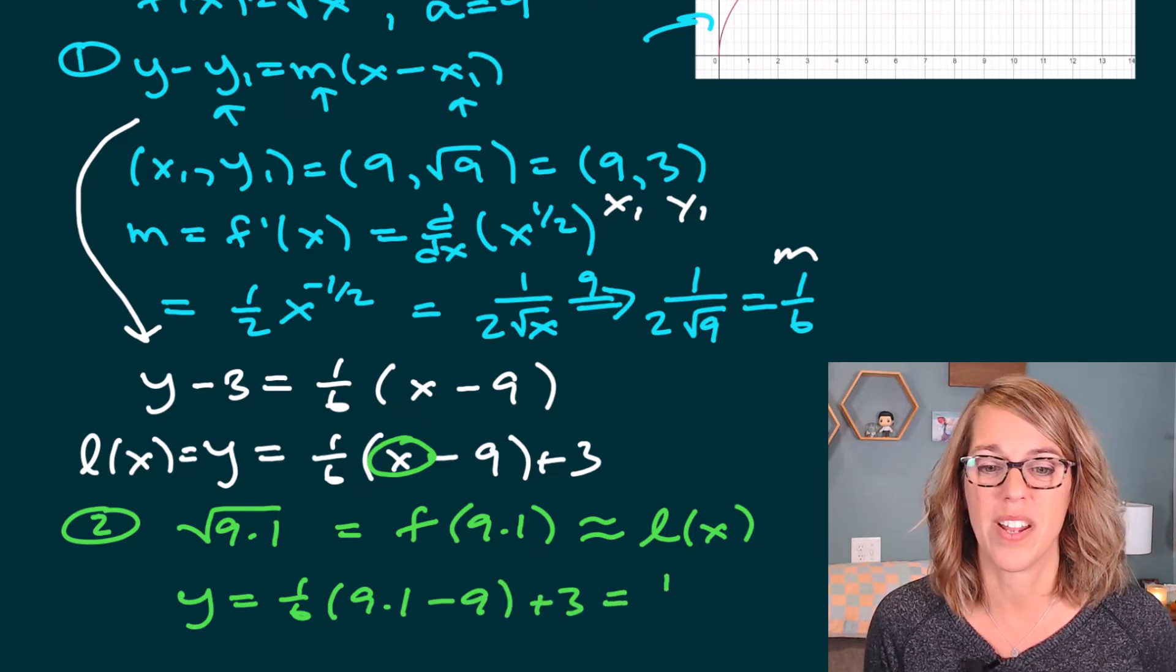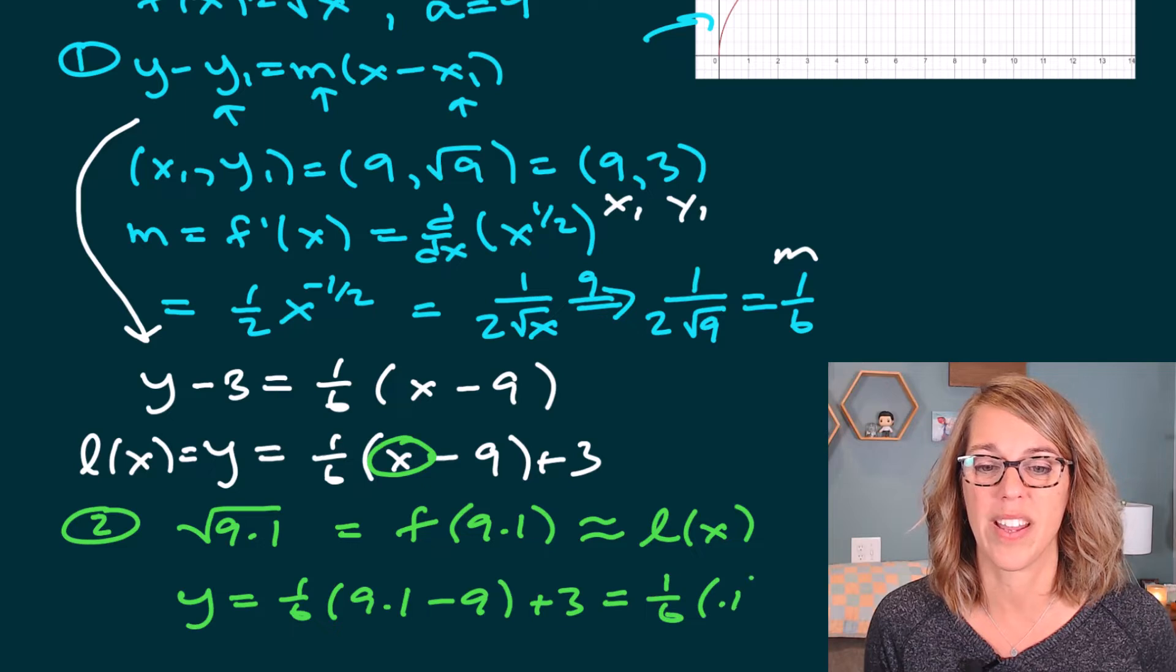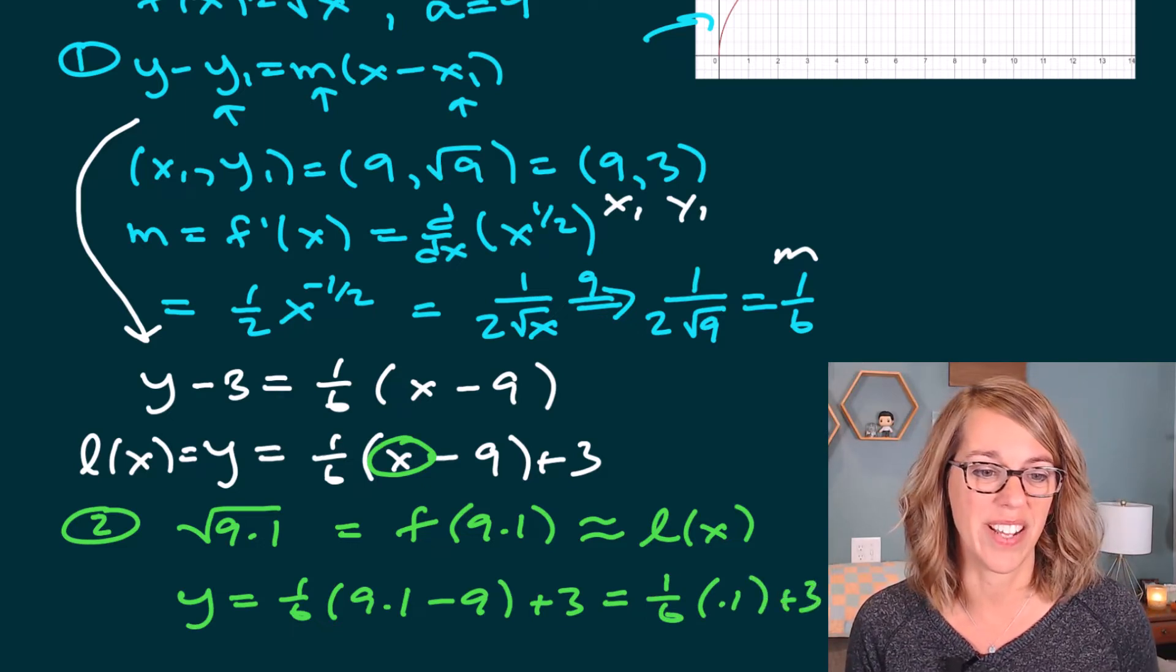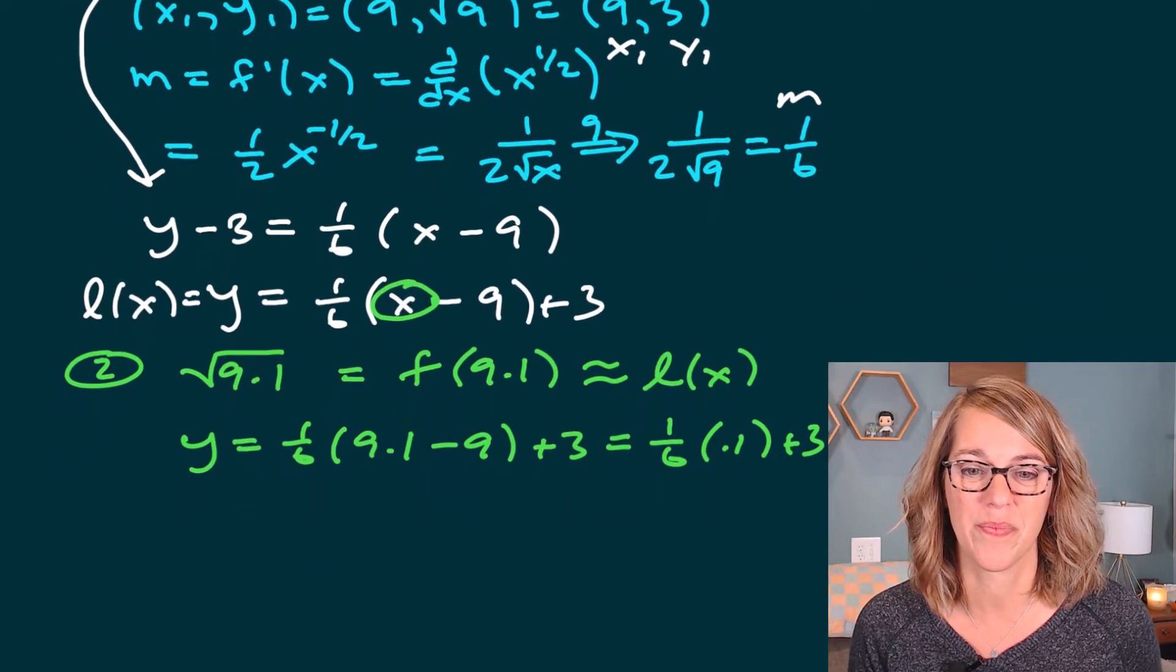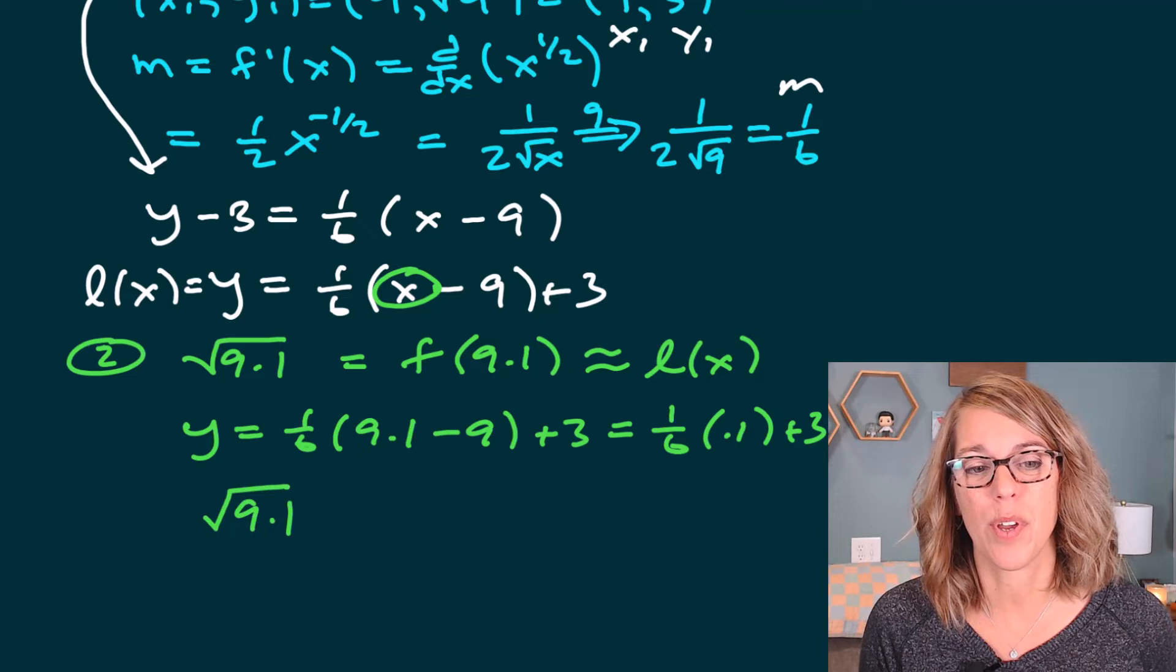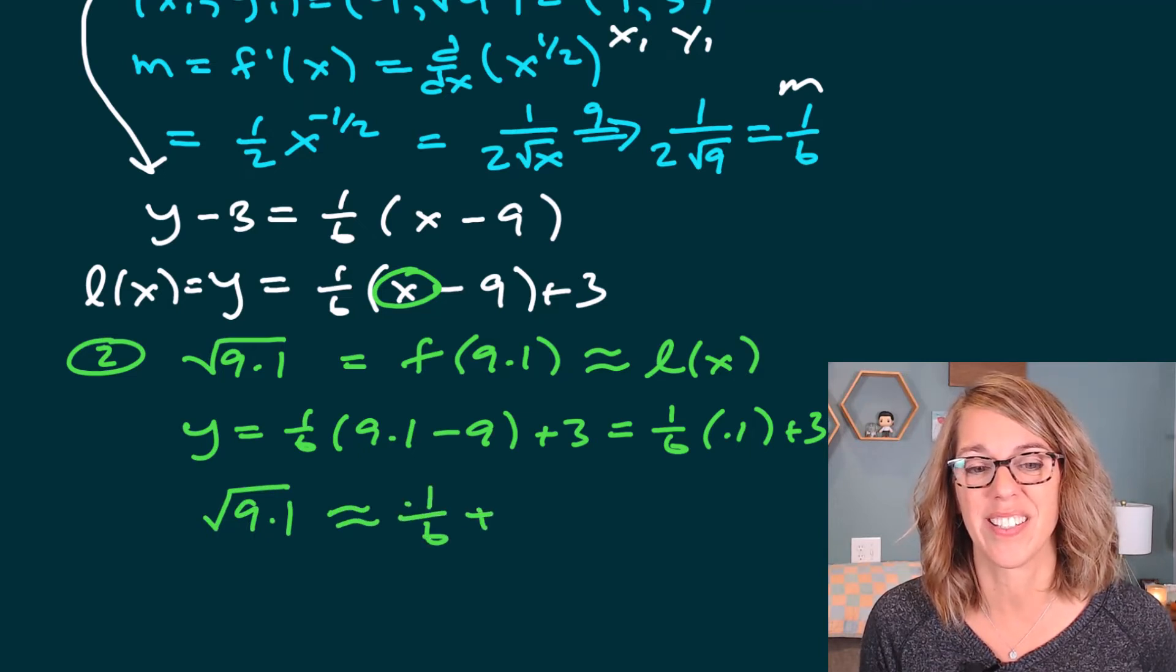Which is going to be 1/6 of 0.1 plus 3. So I can continue and come up with my value. So using my linearization, I get that the square root of 9.1 is approximately 0.1 over 6 plus 3.